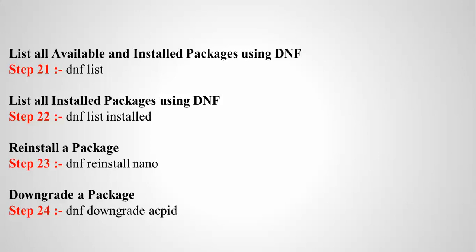After distro-sync it will show the list of available packages. Type: dnf list to see available packages for installation. To see all installed packages, type: dnf list installed — it will show every installed package. To reinstall a package, type: dnf reinstall nano. You can reinstall any package you want to update or restore.